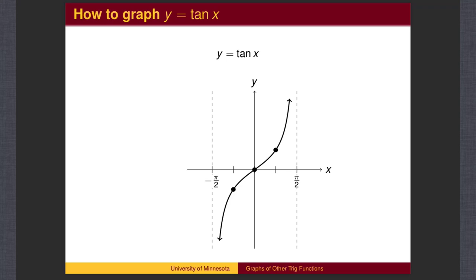One branch of the tangent wave looks like this. What does the tangent function look like to the right of pi over 2? Take a moment to calculate the values of tangent for the angles 3 pi over 4, pi, and 5 pi over 4. You may wish to pause here to calculate those values.